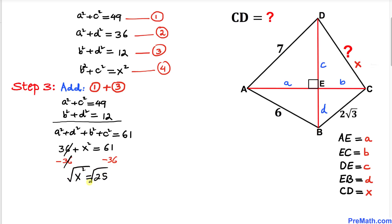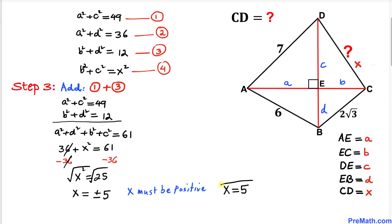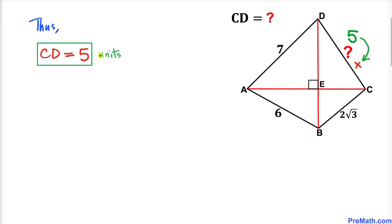Since x represents a side length, it must be positive, so x = 5. Thus our side length CD turns out to be 5 units. Thanks for watching, and please don't forget to subscribe to my channel for more exciting videos. Bye!